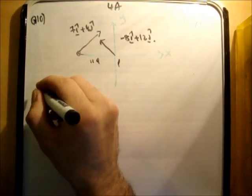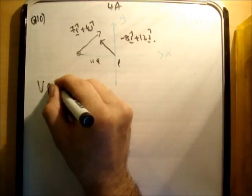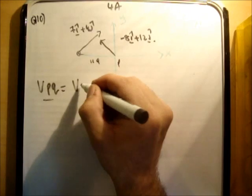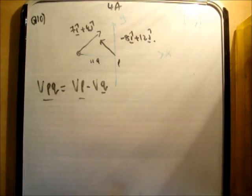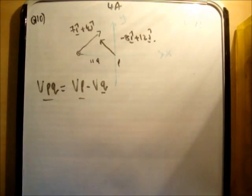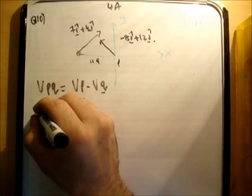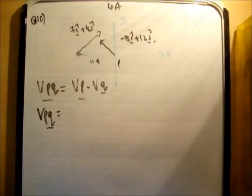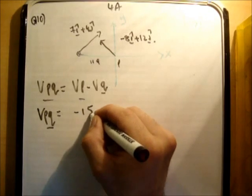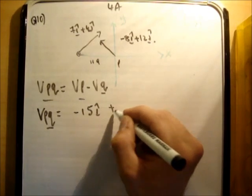So the vector Vpq is equal to Vp minus Vq. That means that Q considers itself to be stationary. How fast is P moving relative to it, we'll say. So Vpq, if you just play around with that, you'll get negative 15i hat plus 8j hat.